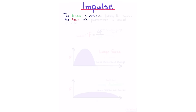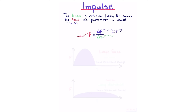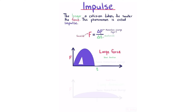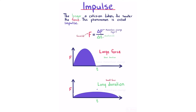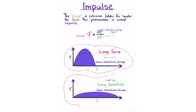Impulse. The longer a collision takes, the smaller the force. This phenomenon is called impulse. The equation is: force equals change in momentum divided by duration. On a force-time graph, a large force over a short duration and a small force over a long duration can have the same area underneath, meaning the same change in momentum.